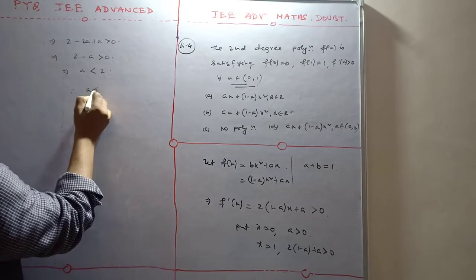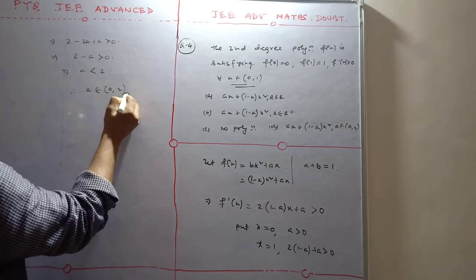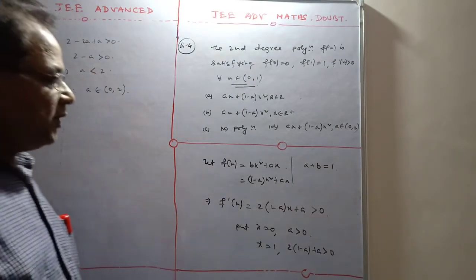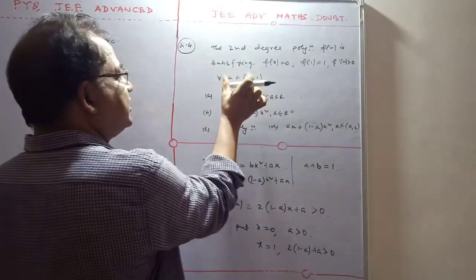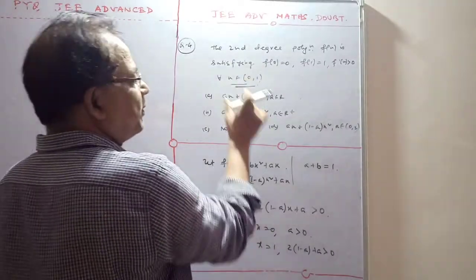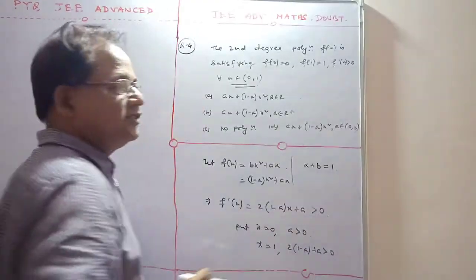From these two relations, the value of a is between 0 and 2. These conditions provide that a is in the interval (0,2).